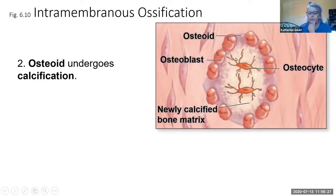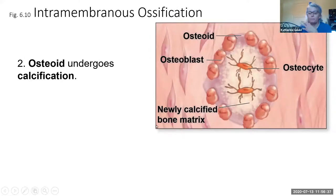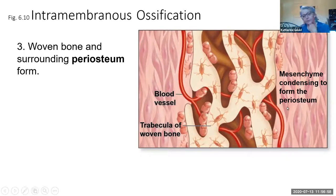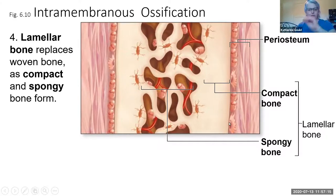The osteoid then becomes ossified. Some of the osteoblasts that are making the osteoid become trapped and become osteocytes. Once the bone is formed, some of it gets worn away to create the trabeculae, and then some of the surrounding tissue becomes the periosteum. Blood vessels come in and weave through to supply the tissue. The result is mature bone — compact bone and spongy bone with periosteum around both.